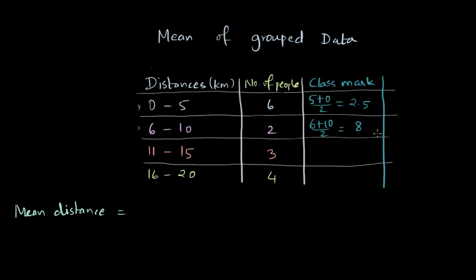Similarly, these two people are supposed to be walking eight kilometers. Let's calculate the class mark for 11 to 15, and that's going to be 13 kilometers. And for 16 to 20, the class mark will be 16 plus 20 divided by two, which is going to be 18 kilometers.